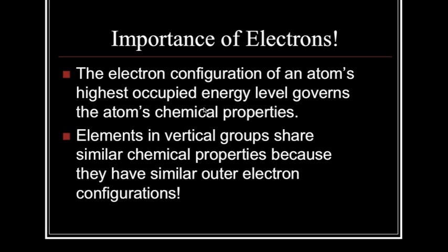Why are electrons so important? The electron configuration of an atom's highest occupied energy level governs the atom's chemical properties. Elements in a vertical group share similar chemical properties because they have similar outer electron configurations. This is where we're talking about valence electrons.